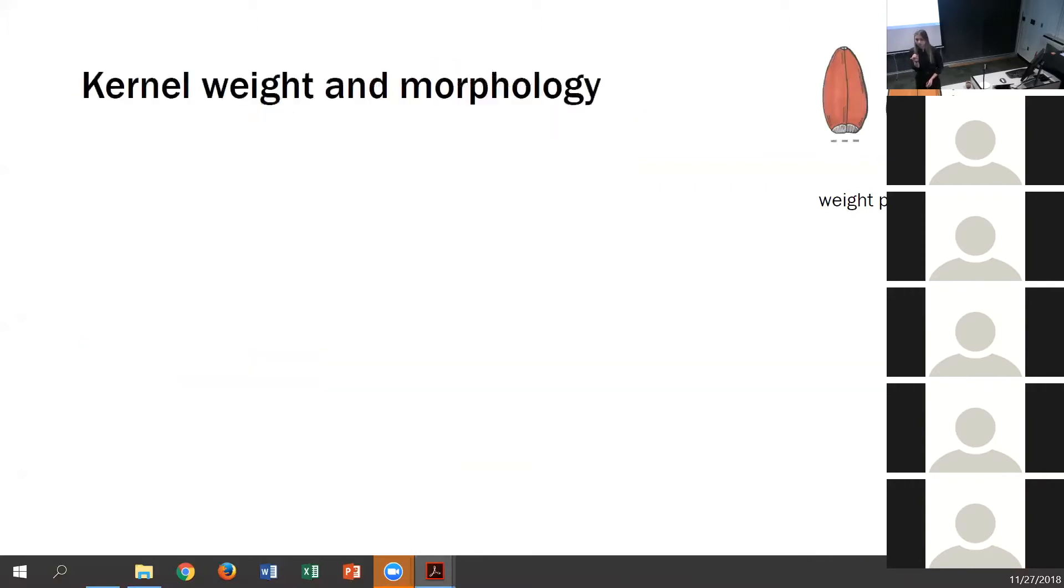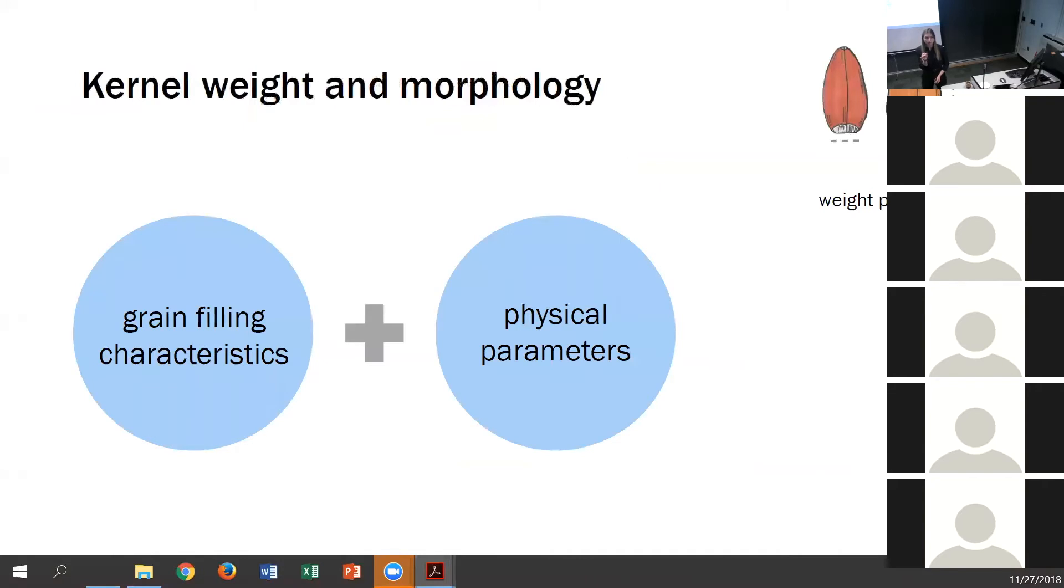Looking specifically at kernel weight and kernel morphology, this is largely controlled by the grain filling characteristics such as how long a variety of wheat is photosynthetically active in the field, as well as the physical parameters of the kernels themselves, such as their length and their width. And those are both under independent genetic control.